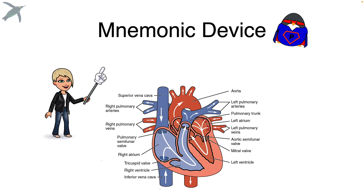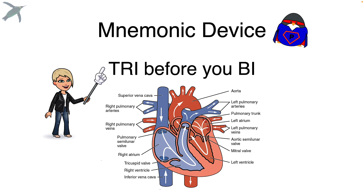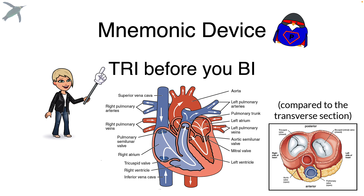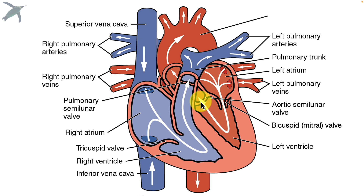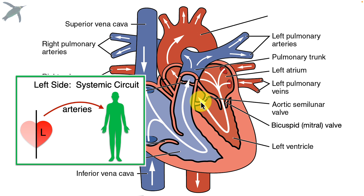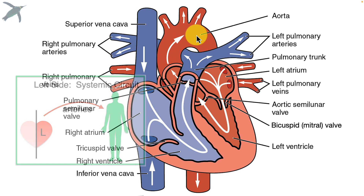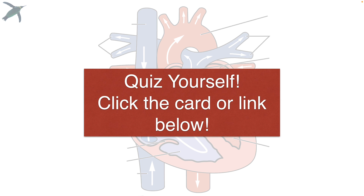A mnemonic device that might help you: if you're moving through the heart starting with deoxygenated blood, remember 'tri before bi' — the blood flows through the tricuspid valve before the bicuspid valve. This is helpful because in a frontal section, you can't actually see how many cusps there are. From the left ventricle, the blood moves through the aortic semilunar valve and out through the aorta to service the cells of the body.